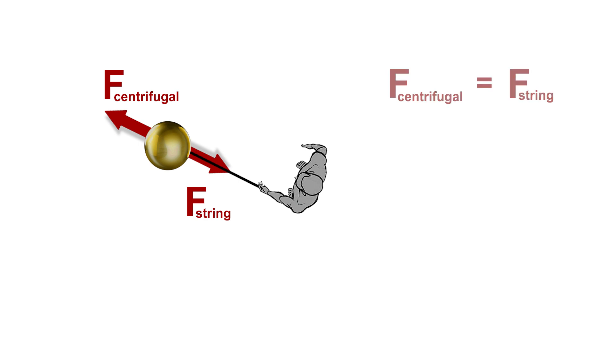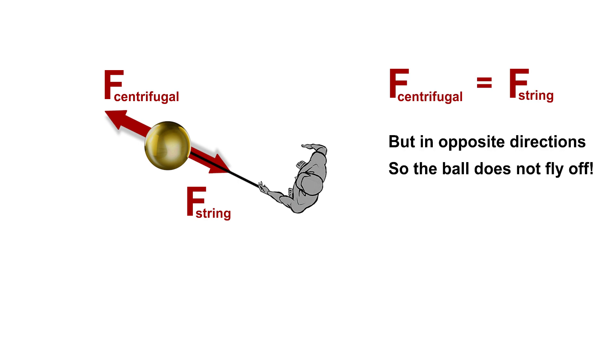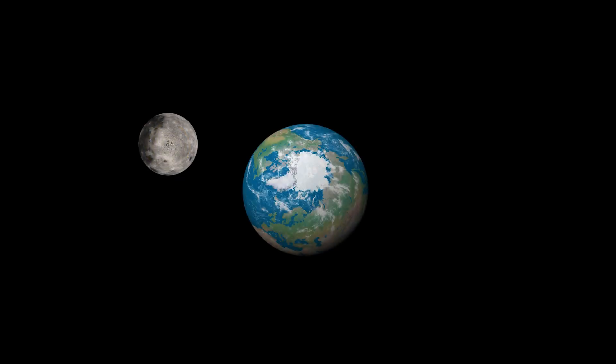As long as you keep a good grip on the string, you're exerting a force that keeps it from flying off. These two forces are equal but in opposite directions, so the ball doesn't crash into you and it doesn't fly off either. The Moon spins around the Earth,